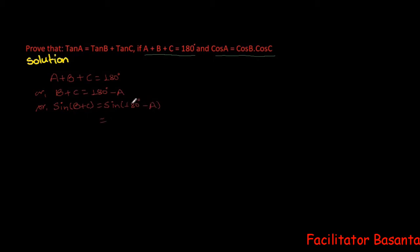The angle 180 minus A lies in the second quadrant. In the second quadrant, sin is positive. Next, the given condition is cos A equals cos B plus cos C. Now taking the right-hand side, which is tan B plus tan C.